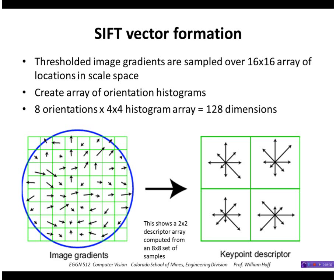For the feature vector itself, we take the neighborhood around the feature point, compute gradient directions for all those points, quantize them into eight different directions, and form a histogram. This is done for a 16x16 neighborhood around the point, formed in a 4x4 histogram array. With eight orientations in a 4x4 array, that gives 128 elements in the feature vector — a very rich descriptor.